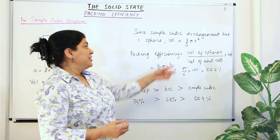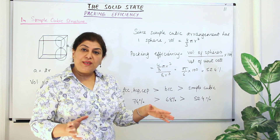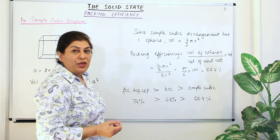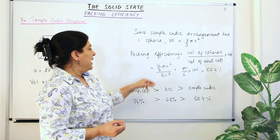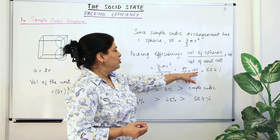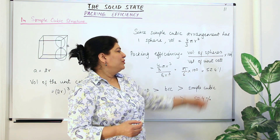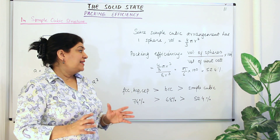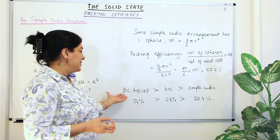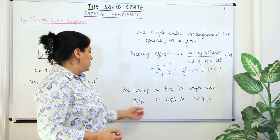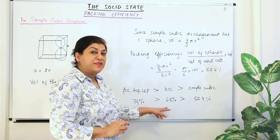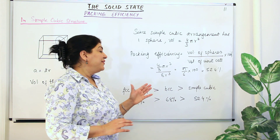Packing efficiency = [(4/3)πr³] / [8r³] × 100. The r³ terms cancel, giving (4/3 × π/8) × 100 = (π/6) × 100. With π ≈ 3.14, this equals 52.4%. So the packing efficiency of a simple cubic unit cell is 52.4%.